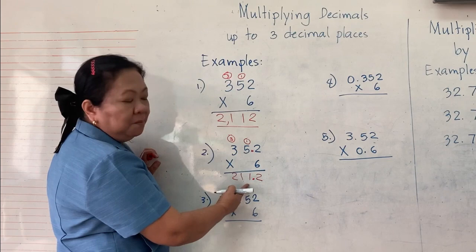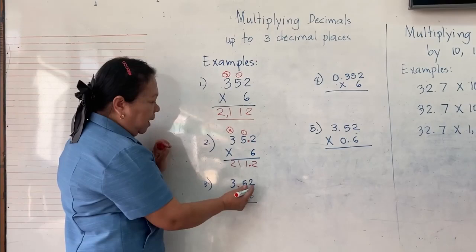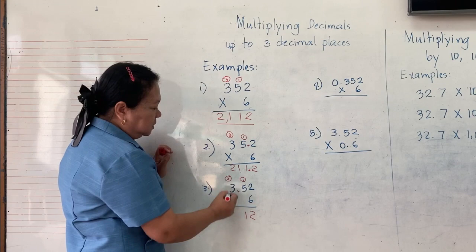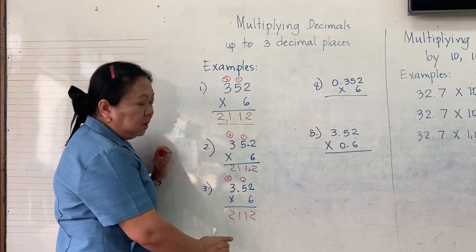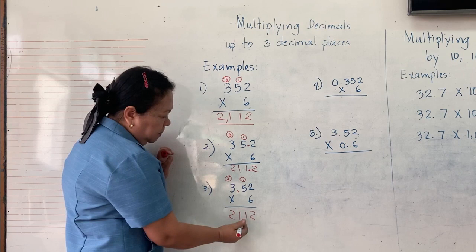Here, 2,112. I hope you will see the difference. Another example: we have 3.52 times 6. Again, 6 times 2 equals 12, carry 1. 6 times 5 is 30 plus 1 is 31, carry 3. 6 times 3 is 18 plus 3 is 21. But you need to count how many decimal places there are — here we have the decimal point and 1, 2. So we will count 2 from the right: 1, 2 — point. The answer is 21.12.